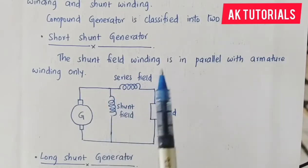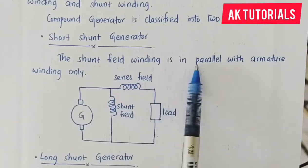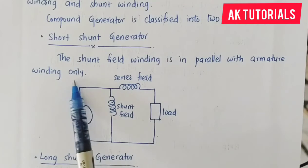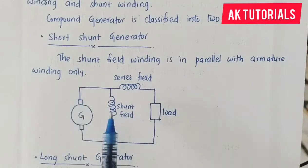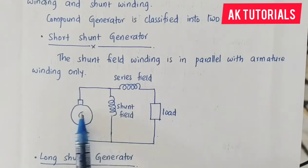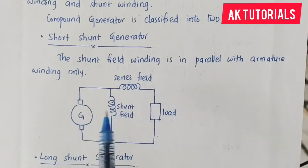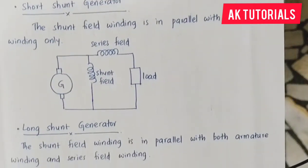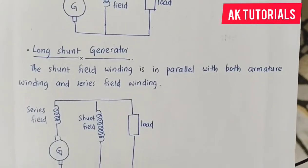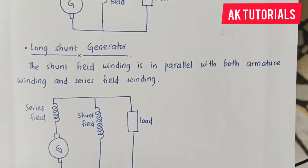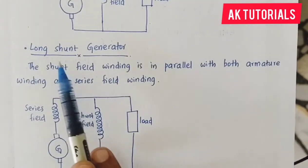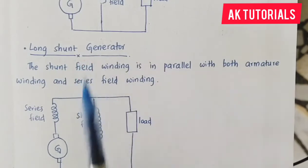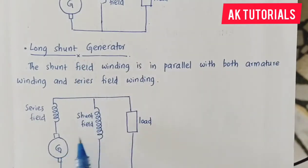In the short shunt generator, the shunt field winding is in parallel with the armature winding only. In the long shunt generator, the shunt field winding is parallel with both the armature winding and the series winding.